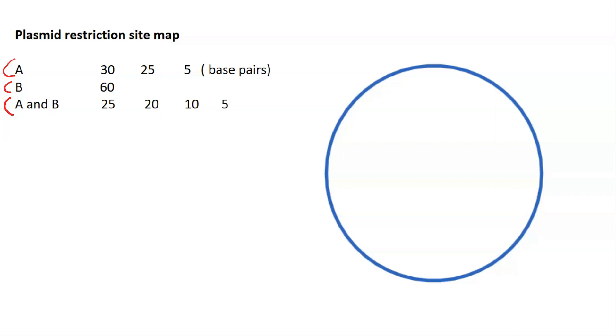Digestion using enzyme A results in a fragment that contains 30 base pairs. This is a very small plasmid because this is a hypothetical example. Then we have a fragment that contains 25 base pairs and a fragment that contains 5. Enzyme B digestion of this plasmid resulted in only one fragment because there was only one cut.